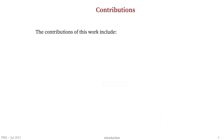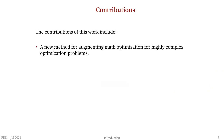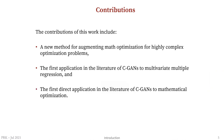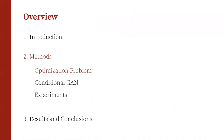This paper has several innovations. First, it provides a new method for augmenting mathematical optimization for highly complex problems. It is also the first application in the literature of CGAN to multivariate multiple regression, and the first direct application of CGAN to mathematical optimization in the literature.